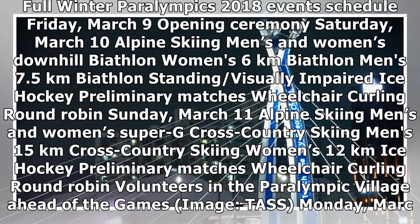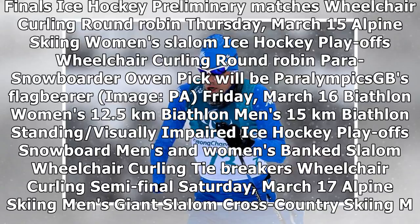Monday March 12 — cross country skiing men's 20km free, cross country skiing women's 15km free, ice hockey preliminary matches, snowboard men's and women's Super G cross, wheelchair curling round robin. Tuesday March 13 — alpine skiing men's and women's Super combined, biathlon women's 10km, biathlon men's 12.5km biathlon standing, visually impaired, ice hockey preliminary matches, wheelchair curling round robin. Wednesday March 14 — alpine skiing men's slalom, cross country skiing men's and women's sprint classic, cross country skiing semifinals and finals, ice hockey preliminary matches, wheelchair curling round robin.